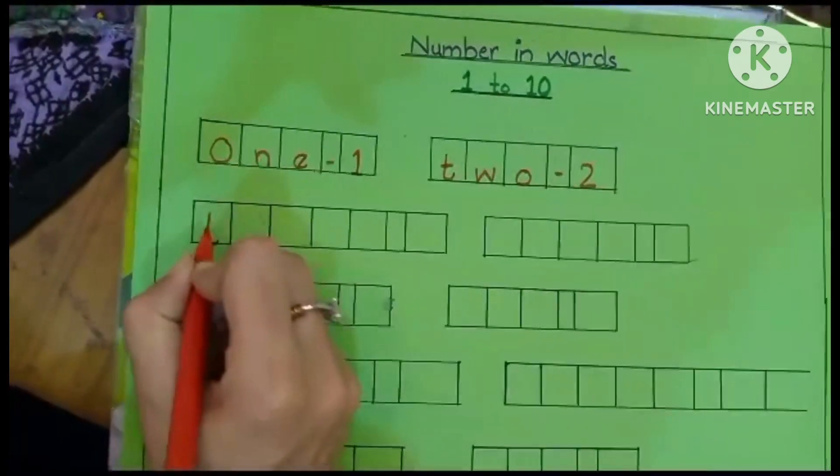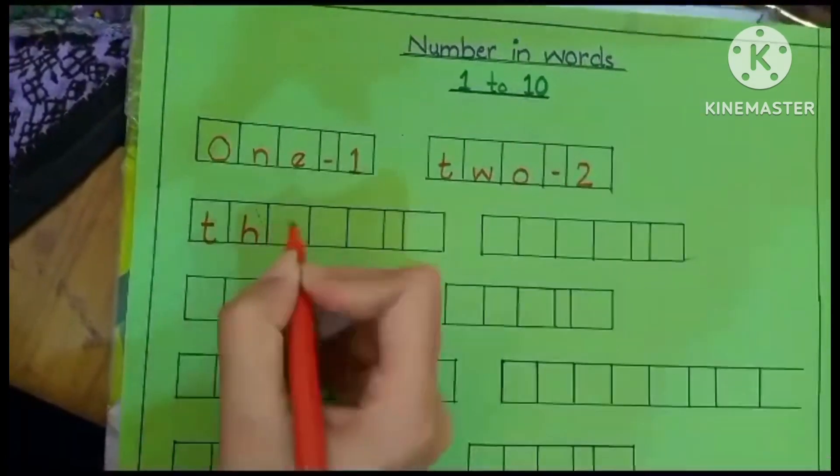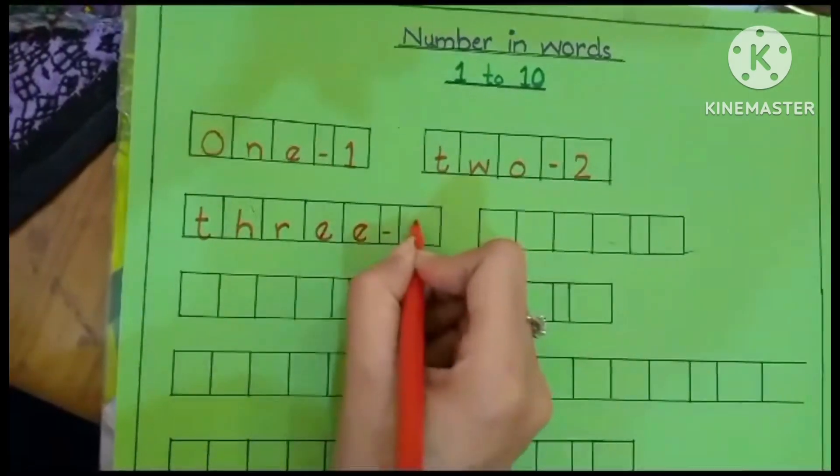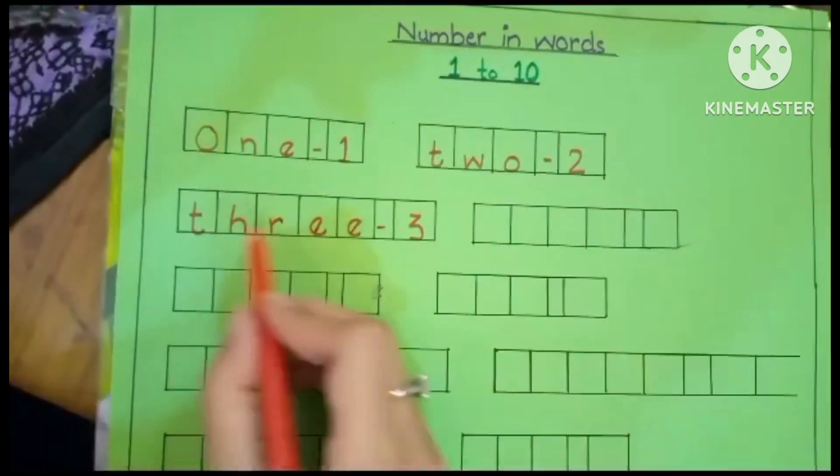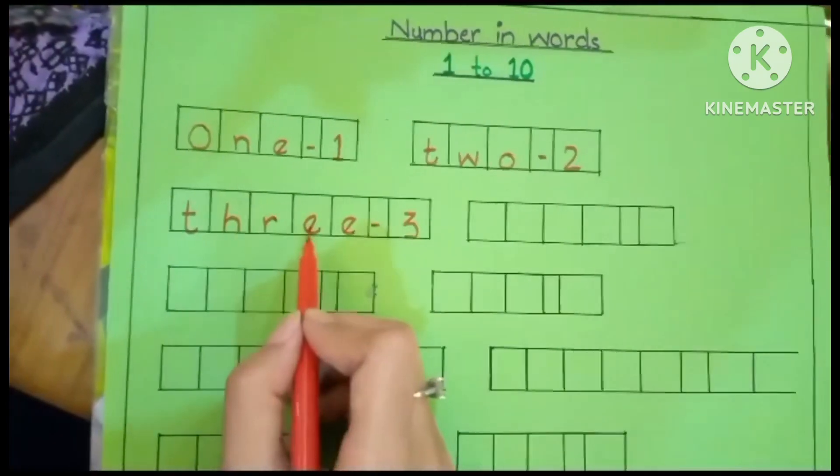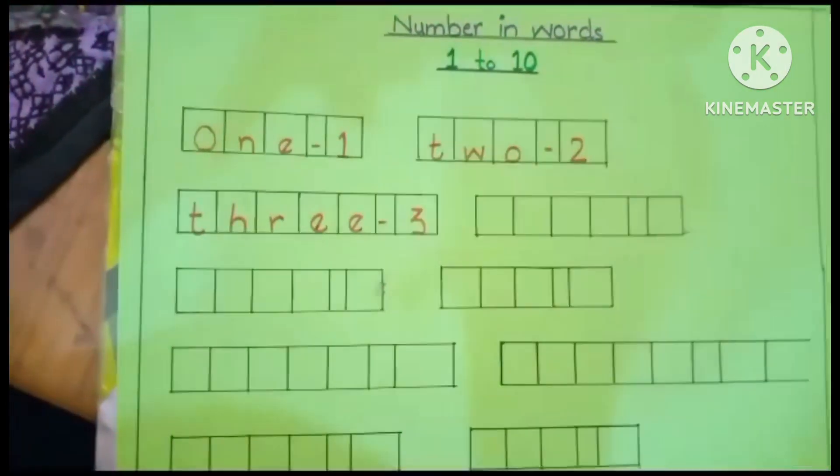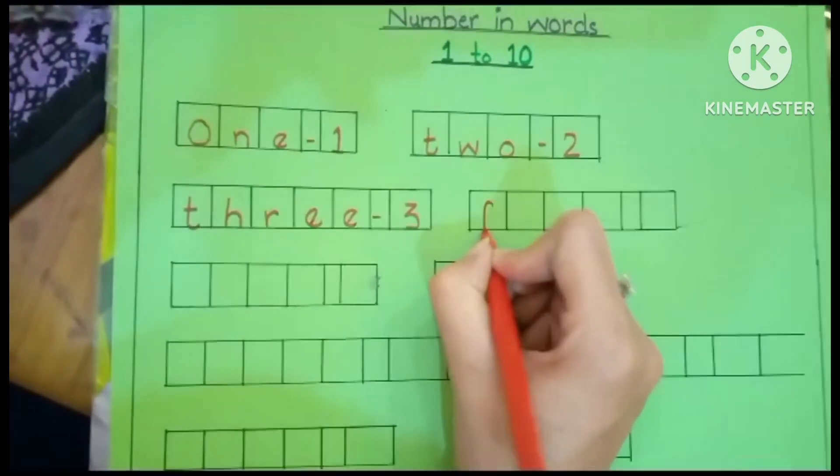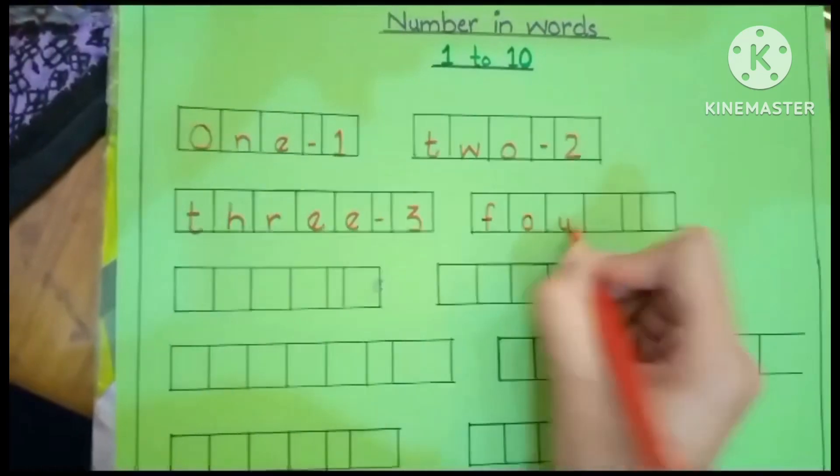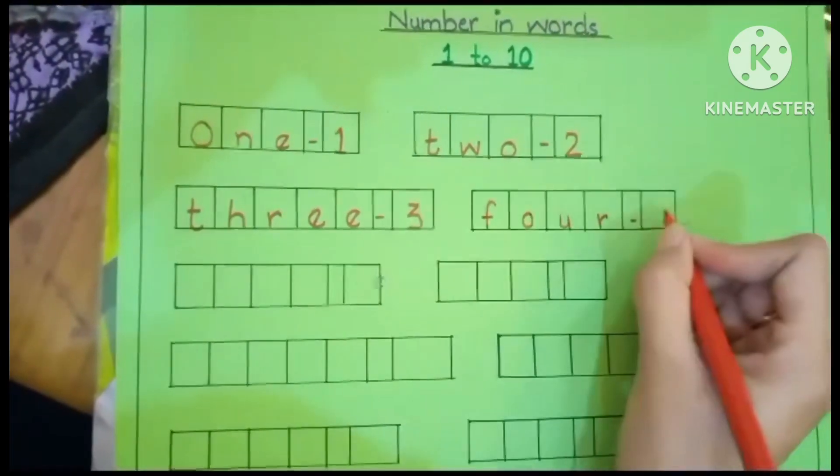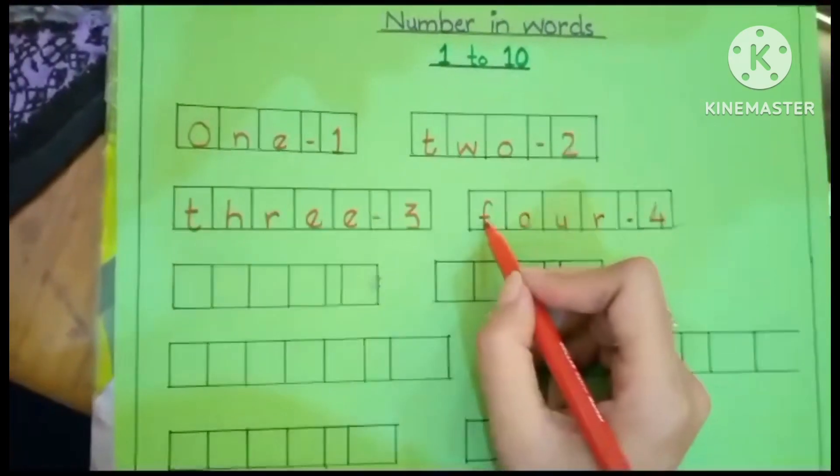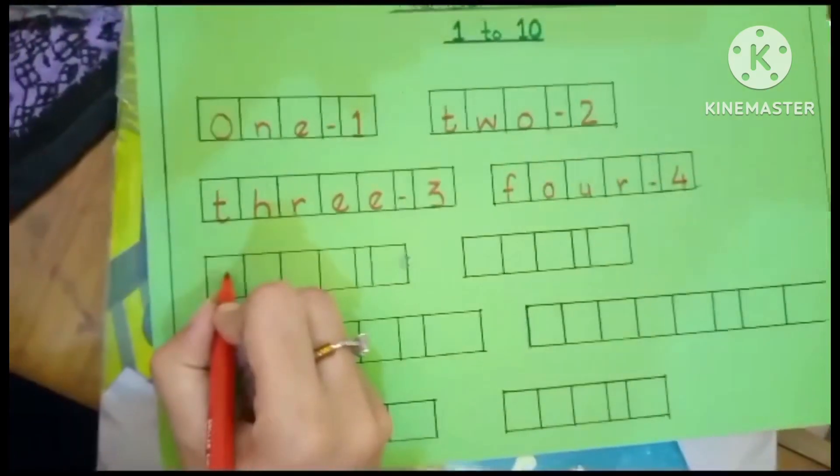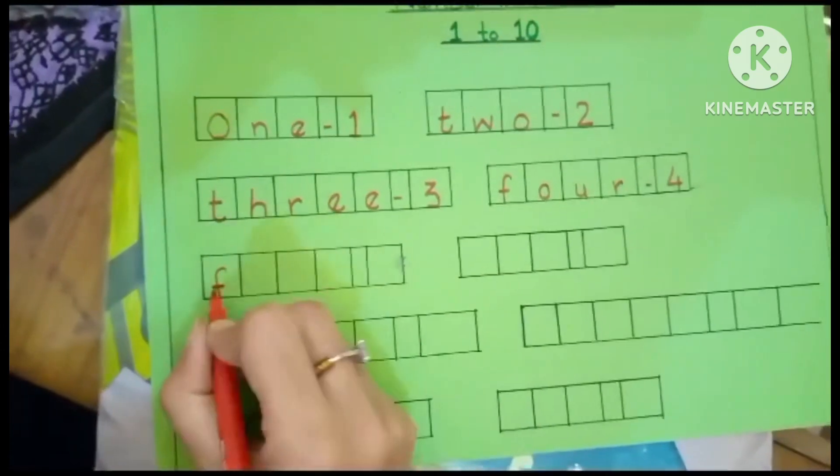T-H-R-E-E, three. T-H-R-E-E, three. Number four: F-O-U-R, four. F-O-U-R, four. Five: F-